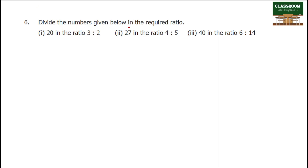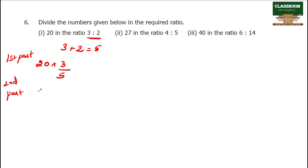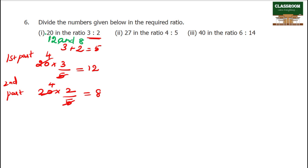Divide the numbers given below in the required ratio. One number is divided by 3 is to 2. So divide into parts: 3 plus 2 equals 5 parts. 1 part: 20 into 3 by 5. Second part: 20 into 2 by 5. 4 threes are 12, 4 twos are 8. The answer is 12 and 8.